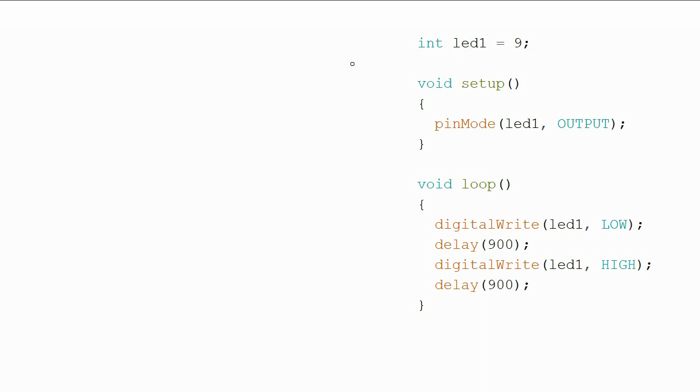We declare an LED on pin 9, we set the pin to an output mode, and then we toggle it from low to high every 900 milliseconds, such that it's flashing.